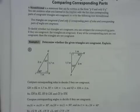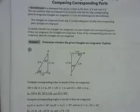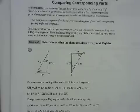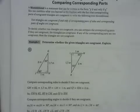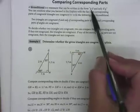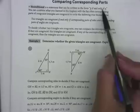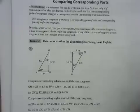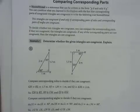Before we get into determining whether triangles are congruent, we draw a conclusion from that explore activity. We observed that if two figures are congruent, their corresponding parts are congruent, and if the corresponding parts are congruent, the figures are congruent. Because the statement and its converse are both true, we can write a biconditional statement — a statement in the form 'P if and only if Q' — which is true in both directions.